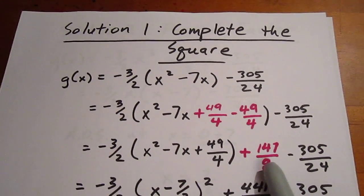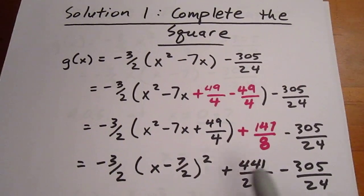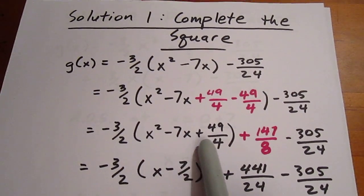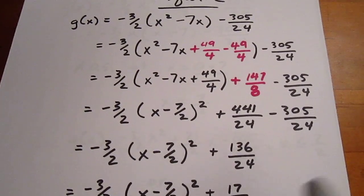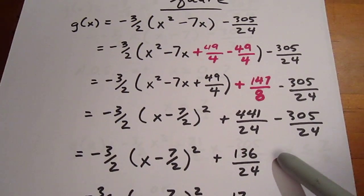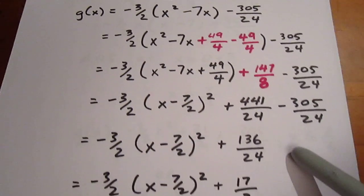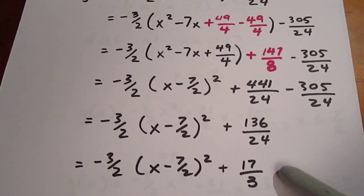We then collect like terms out here and at the same time recognize that the bracket is x minus 7 halves quantity squared. This would give us this expression here, 136 over 24 would reduce to 17 over 3.